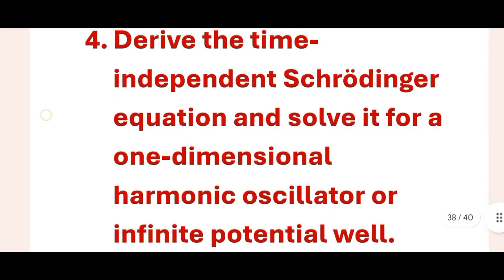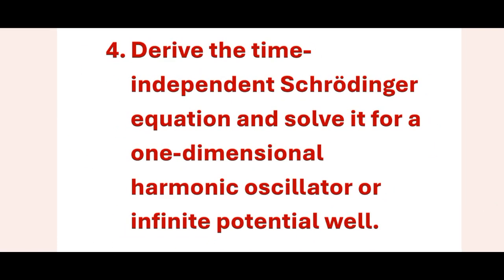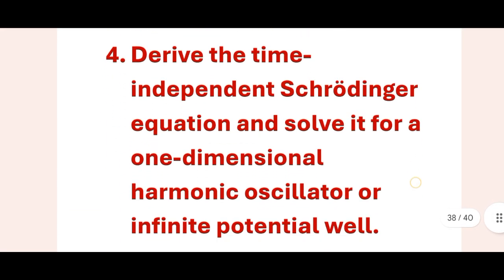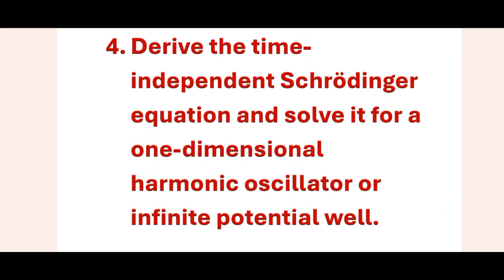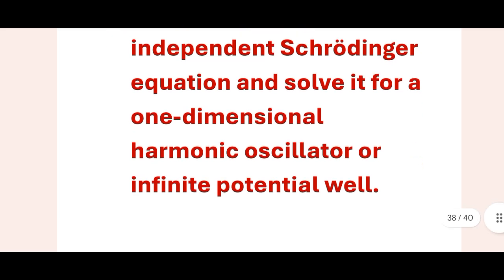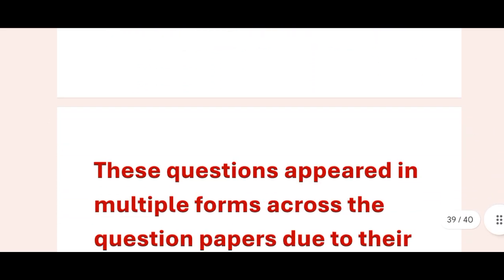Next, fourth question: Derive the time-independent Schrodinger equation and solve it for a one-dimensional harmonic oscillator or infinite potential well. So they have asked this previously in part B section also, Schrodinger equation and uncertainty principle. So I think these two are the most hard questions or concepts. So prepare well for those concepts.